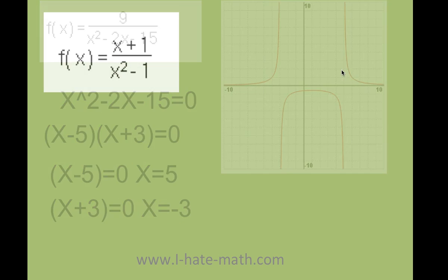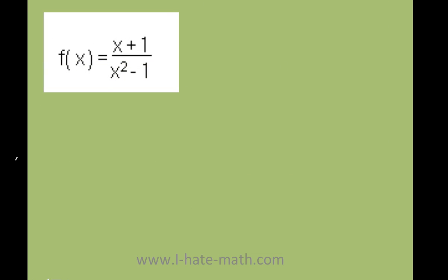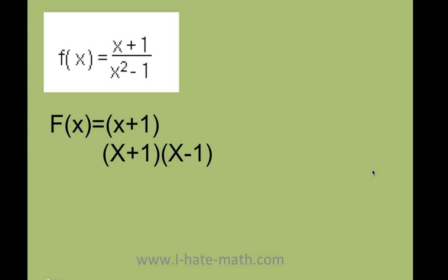Sometimes you're going to have what we call holes. Here I have f of x equals x plus 1 over x squared minus 1. I can rewrite this: the top is x plus 1 and the bottom is x plus 1 times x minus 1. You might say my vertical asymptotes are x equals negative 1 and x equals 1 — but look what's happening. This x plus 1 factor is actually going to cancel, so I'm left with 1 over x minus 1.